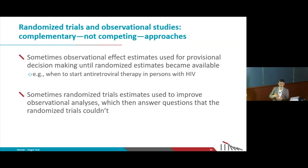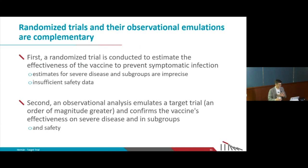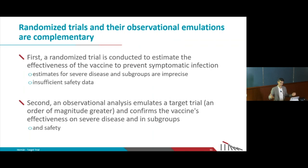What we want is to use both at the same time in the best possible way. We can use observational estimates to make decisions while trials are being finished — as in the antiretroviral therapy example. Or we can use trials to do better observational analysis through benchmarking and then extending. That's how this should work: first a randomized trial answers a limited question, then an observational study benchmarks the trial estimates and extends to broader questions, different subgroups, longer follow-up, and slightly different outcomes.